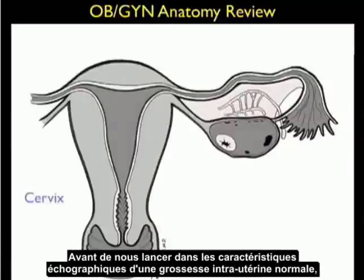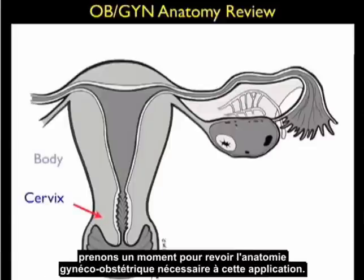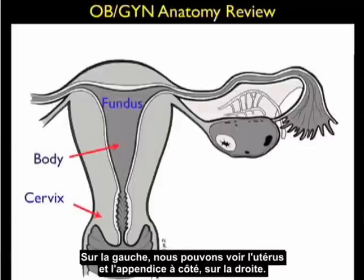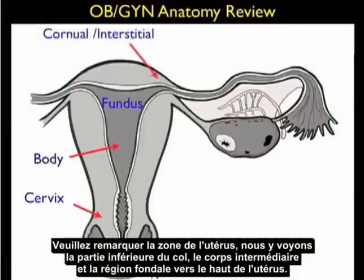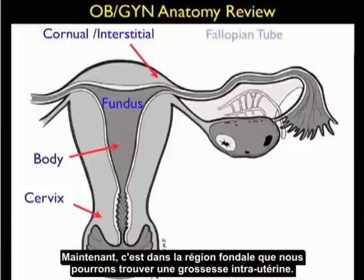Before launching into the sonographic findings of a normal intrauterine pregnancy, let's take a moment to quickly review the OBGYN anatomy important for this application. We see the uterus to the left and adnexa to the right. Notice the areas of the uterus — the intermediate body and the fundal region towards the top. The fundal region is where we define an intrauterine pregnancy to be located.